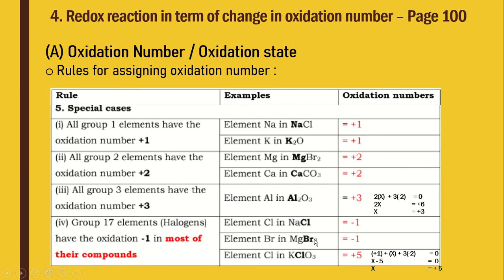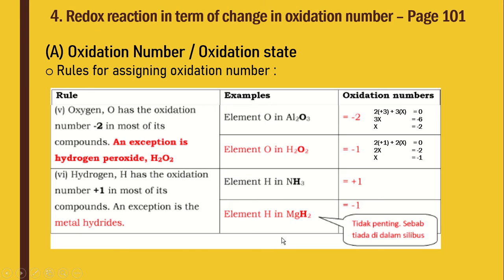The same goes for bromide — bromine gains 1 electron to become bromide ion Br⁻, with oxidation number −1. However, there is a special case for chlorine. In potassium chlorate KClO₃: K is +1, and 3×(−2) for oxide, so solving X: +1 + X + 3×(−2) = 0 gives X = +5. This shows a special case where chlorine's oxidation number is not −1.